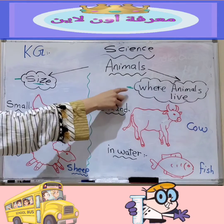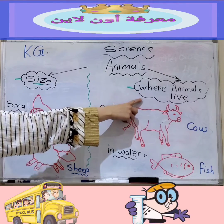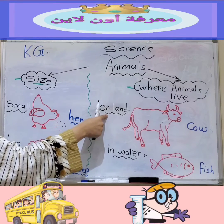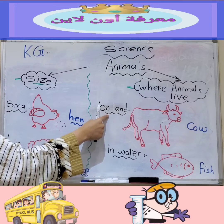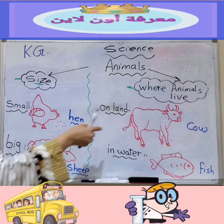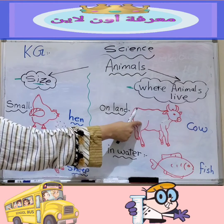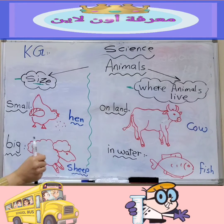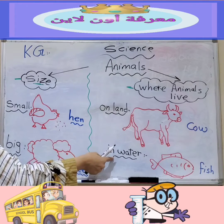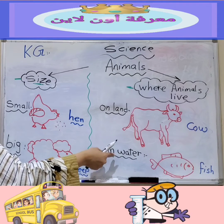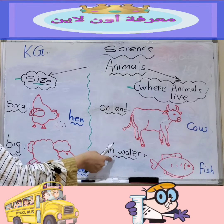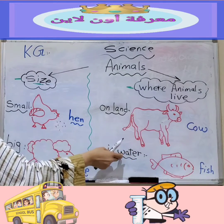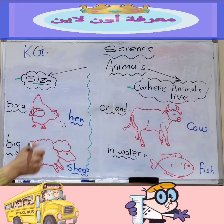Number two, where do animals live? Some animals live on land, like the cow. The cow lives on land. Some animals live in water, like the fish. The fish lives in water.